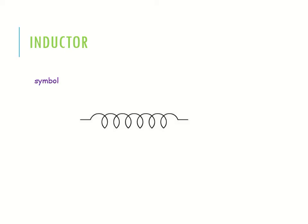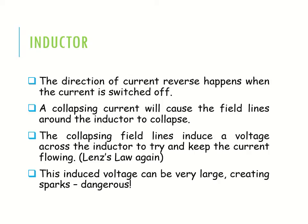This is the symbol of an inductor. When current flowing through the inductor reverses — called a collapsing current — it will cause the field lines around the inductor to collapse. The collapsing field lines induce a voltage across the inductor to try and keep current flowing; that is known as Lenz's law. This induced voltage can be very large, creating sparks, which is dangerous.